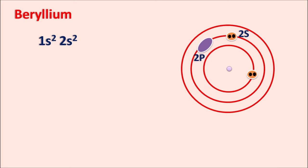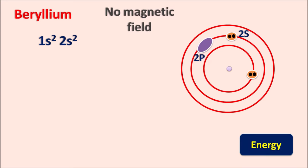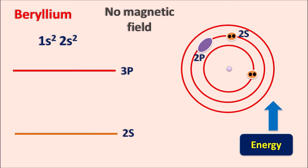In case of beryllium, what happens when we supply energy? The energy can be supplied in the presence or absence of a magnetic field. Under the absence of a magnetic field, when we apply energy the electrons undergo transition — they can produce an electronic transition from the 2s orbital to the 3p orbital. This transition requires energy equal to the energy gap between the 2s and 3p orbitals, so we observe a single transition.